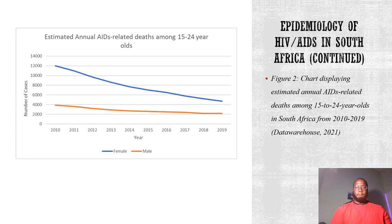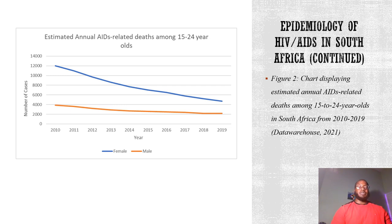This chart displays estimated annual AIDS-related deaths among 15–24 year olds from 2010 to 2019. You can see a decline in the number of deaths, which then begins to level off. South Africa is looking to continue to mitigate AIDS-related deaths by continuing treatment and providing resources to affected individuals so these rates can continue to drop.